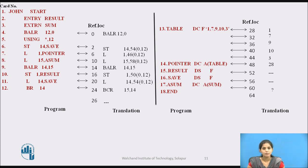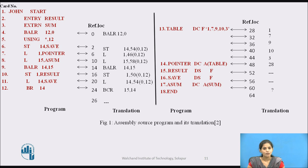A simple example using a direct linking loading scheme is presented in the figure. A source program on the left-hand column is translated by an assembler to produce the object code shown in the right-hand column. Card number 14 contains a Define Constant (DC) pseudo-operation which instructs the assembler to create a constant with the value of the address of table, and causes this constant to be placed in the location labeled pointer.